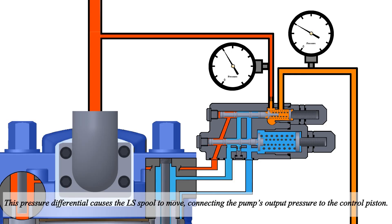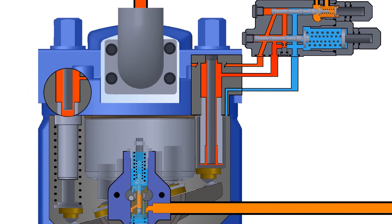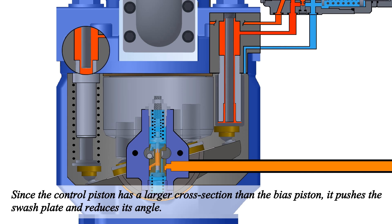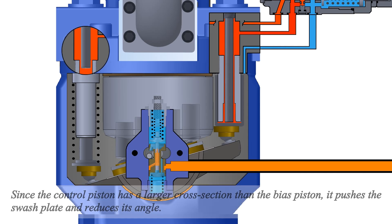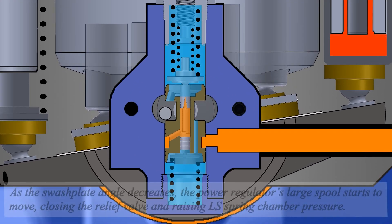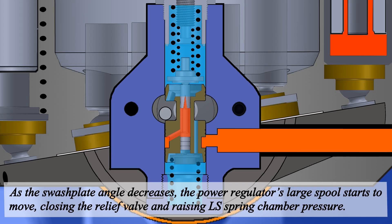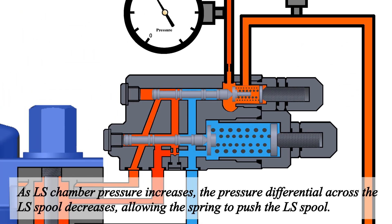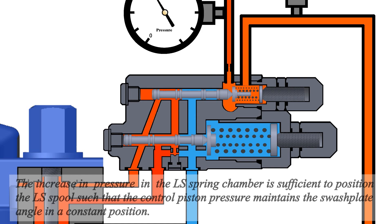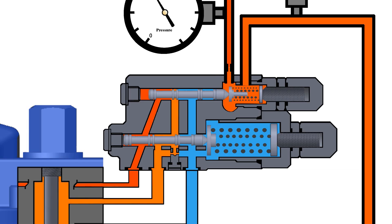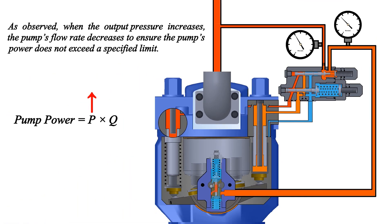This pressure differential causes the LS spool to move, connecting the pump's output pressure to the control piston. Since the control piston has a larger cross-section than the bias piston, it pushes the swash plate and reduces its angle. As the swash plate angle decreases, the power regulator's large spool starts to move, closing the relief valve and raising LS spring chamber pressure. As LS chamber pressure increases, the pressure differential across the LS spool decreases, allowing the spring to push the LS spool. The increase in LS spring chamber pressure is sufficient to position the LS spool so that the control piston pressure maintains the swash plate angle at a constant position. As observed, when the output pressure increases, the pump's flow rate decreases to ensure the pump's power does not exceed a specified limit.